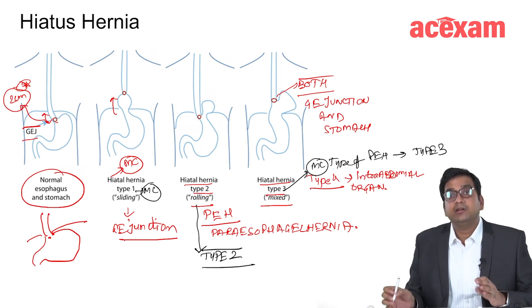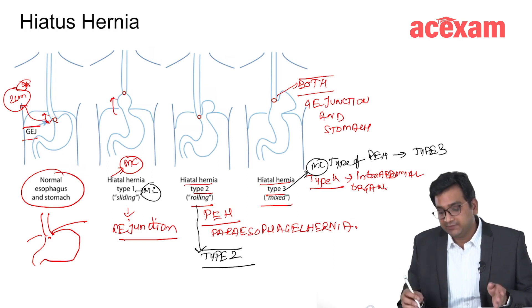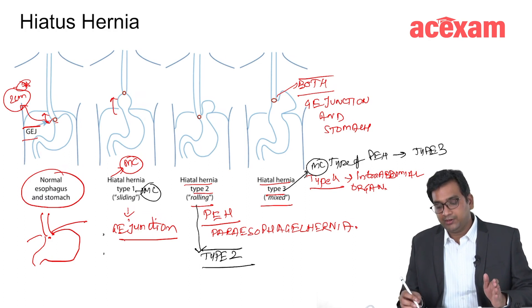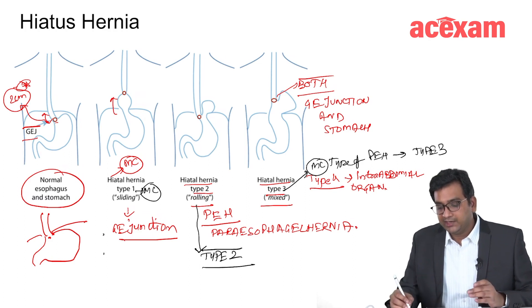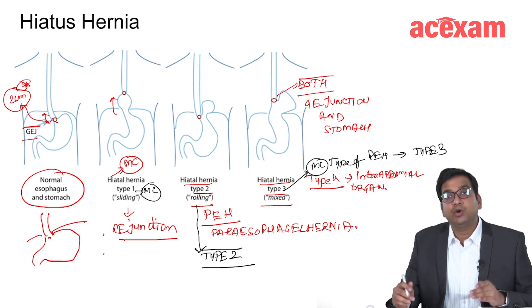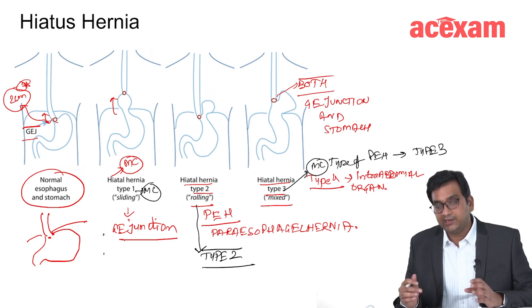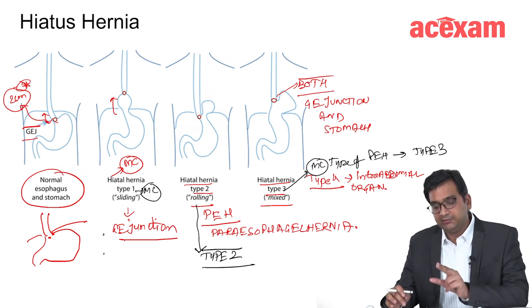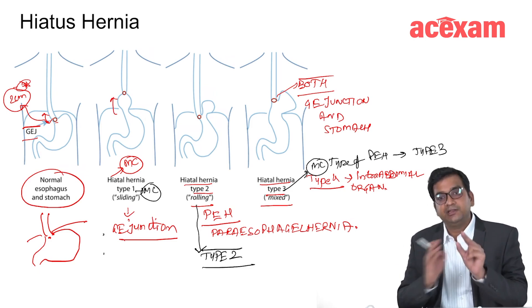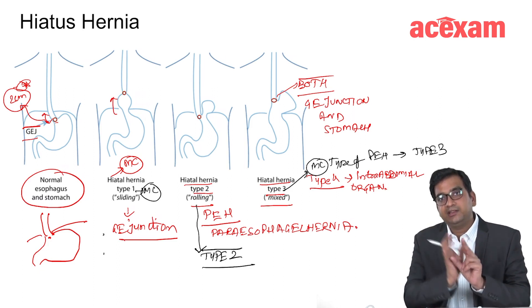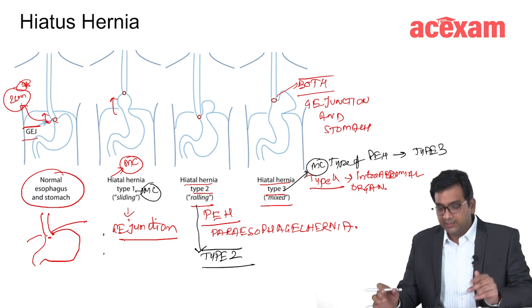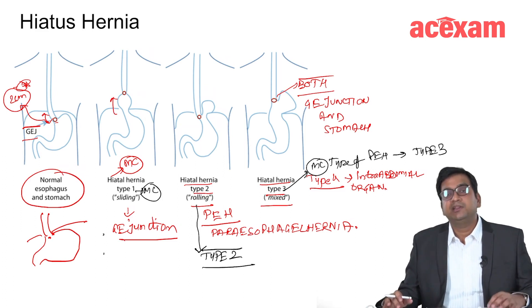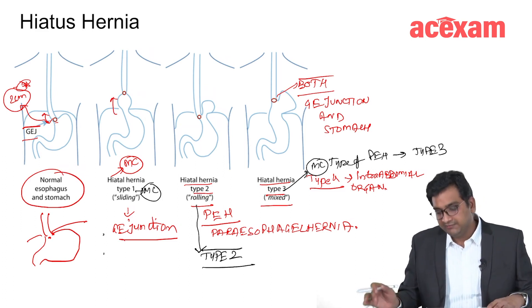What is the most common symptom seen in type 1 hiatus hernia? It is reflux or GERD. In type 2 hernia, there is abdominal pain because repeatedly the stomach is going into the narrow space between the esophagus and the diaphragm. In type 3 hernia, there is presence of both reflux and abdominal pain.